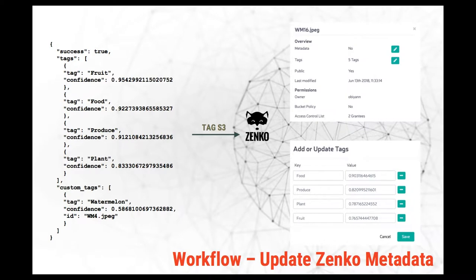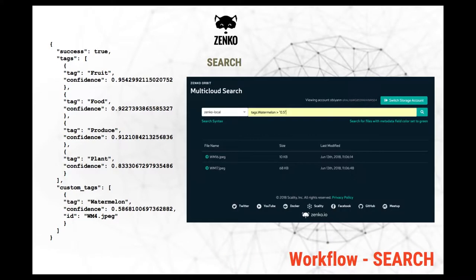We'll be able to upload all those tags as metadata into Zenko. This is really cool — we'll see it in the Orbit GUI in Zenko, and then we'll be able to search that metadata, which is the most important part. Imagine having tons of images uploaded to storage — it'd be great to do automatic metadata tagging on upload, and then search that content using SQL-like queries. For example: give me all images with a watermelon confidence greater than 0.5 that are also recognized as food or plant.